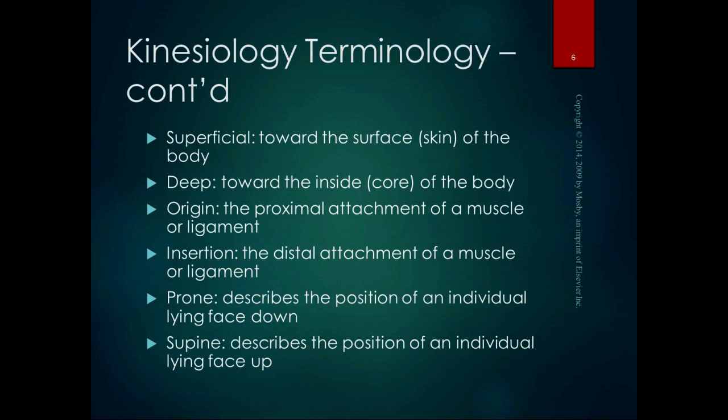A few more pairs: superficial and deep. Superficial means toward the surface — the skin of the body — and deep means toward the inside or the core of the body. So we can say the skin is superficial to the muscles, the bones are deep to the muscles, and your heart is deep to your rib cage. We'll talk about individual muscles and their relationships when we start discussing muscles specifically.